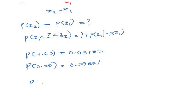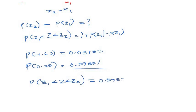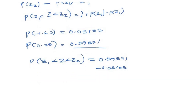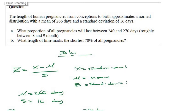Our final probability: P(z1 < z < z2) equals P(z2) minus P(z1), which is 0.59871 minus 0.05155. Pressing this on the calculator gives 0.54716, which we can approximate to three decimal places as 0.547. That is our final answer for part A.